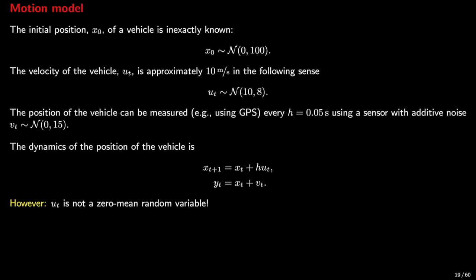So consider a train. At time 0, the position of the train is x₀, and it follows the normal distribution with a mean of 0 and the variance of 100. For the sake of simplicity, we consider the example of a train because it moves on a line, so the position will be one-dimensional.